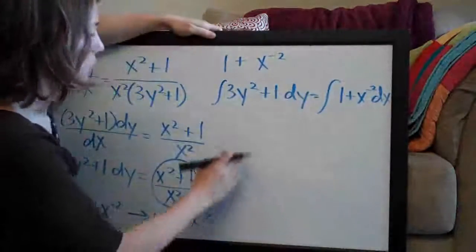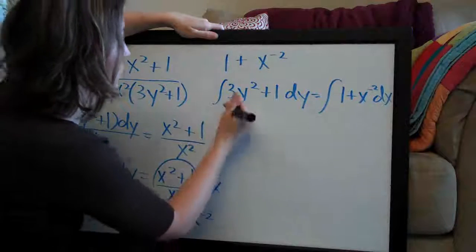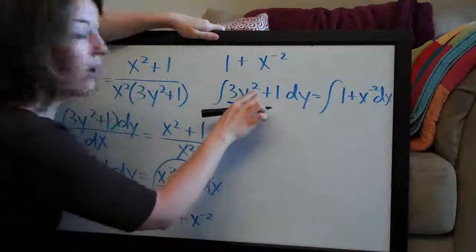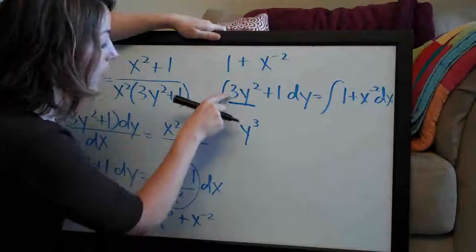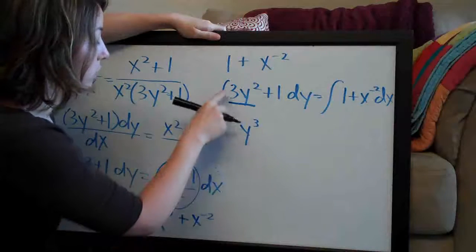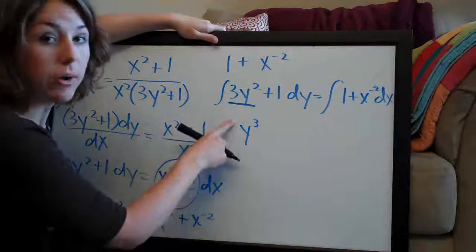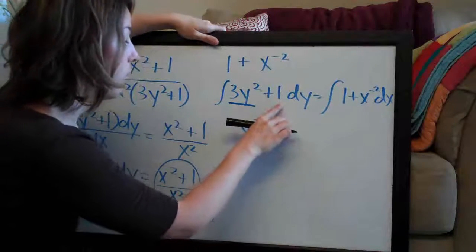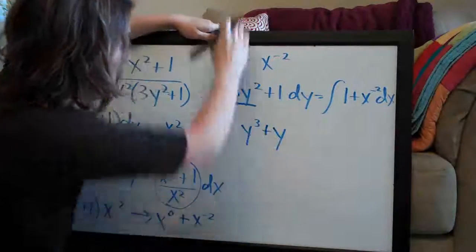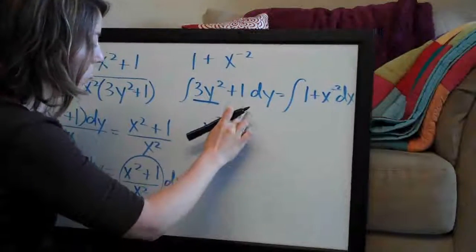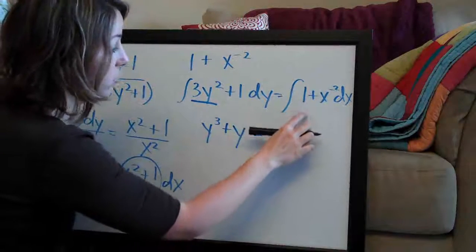Now we take the integral term by term. Starting with 3y squared: add 1 to the exponent to get y cubed, then divide the coefficient 3 by the new exponent 3, which gives 1 — so just y cubed. The integral of 1 on the y side is just y. So the left side integrates to y cubed plus y.